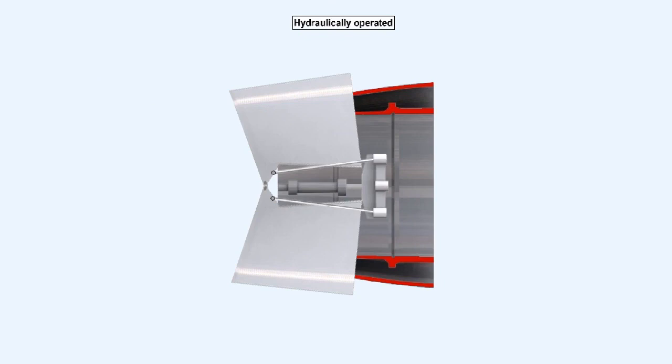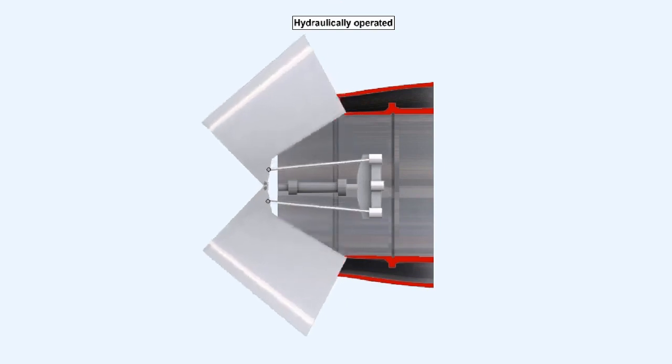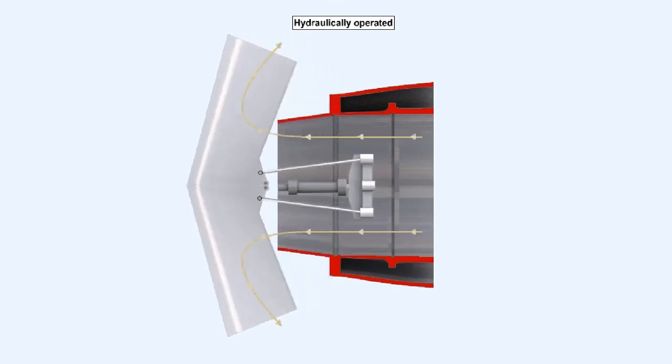The bucket reverser system is normally hydraulically operated. The rear portion of the engine exhaust pipe is shaped like two halves of a bottomless bucket which are hinged to enable them to swing rearwards when selected to deflect the exhaust gas forward.